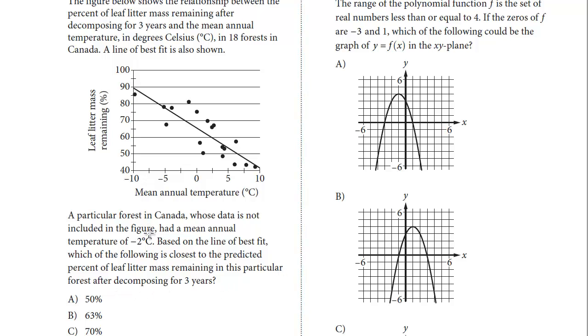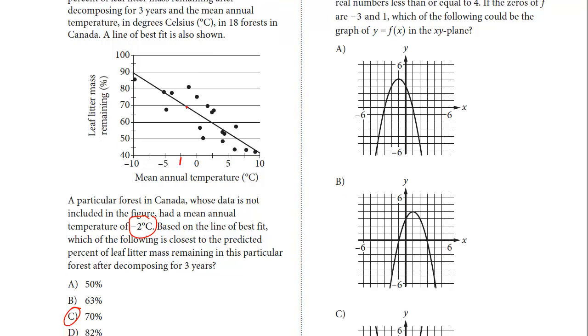And so all we have to do is look for negative two Celsius. So here's zero. This would be negative 2.5, and so it's going to be just a little to the right. It's going to be right there on the line of best fit. It's going to be right at 70, isn't it? So pretty straightforward question. And the answer is C.